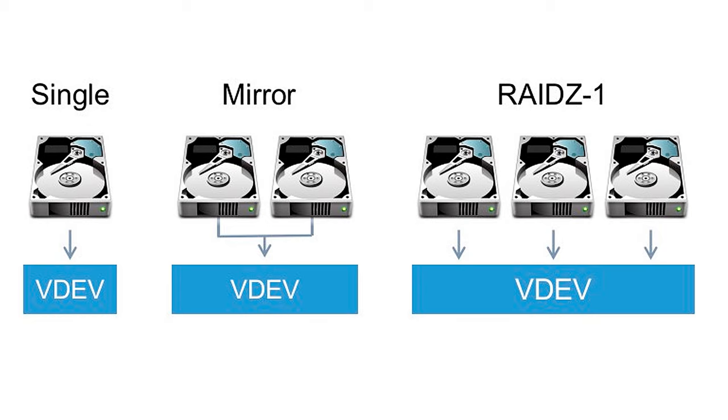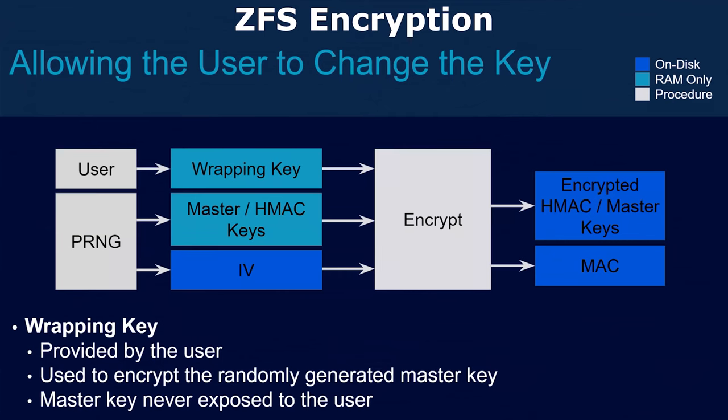This file system can compress data on the fly, which saves disk space without a noticeable loss of performance. ZFS provides various levels of data protection that include mirroring, RAID 1, and RAID-Z — a level similar to RAID 5 and RAID 6 — to boost fault tolerance. If a disk fails, ZFS will switch data automatically to available disks and replace the faulty ones. Data encryption is supported to improve privacy. Dynamic extension and reduction: you can easily increase and decrease the storage pool without having to create the file system again.